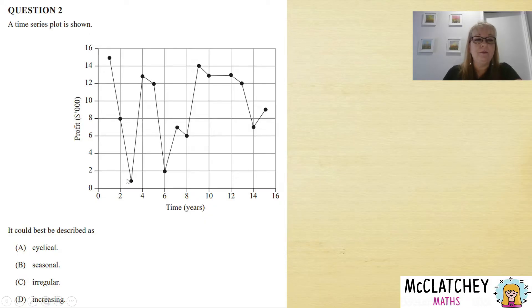For cyclical, we would expect a pattern repeating over a number of years—we're not seeing that at all, so we can rule out cyclical. For seasonal, we'd expect a repetition every year within the same year. We're not seeing that at all; there's just definitely no pattern.